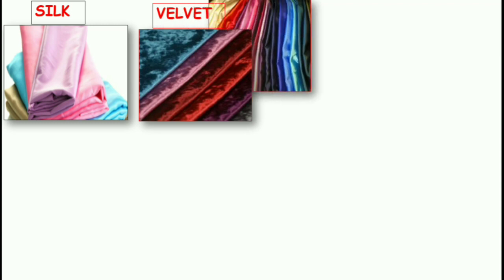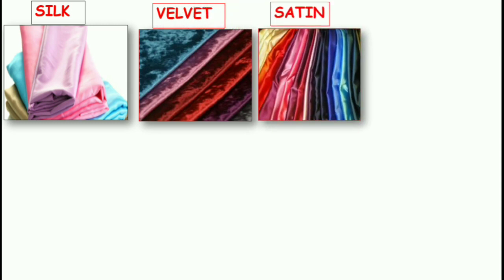Now let us move on to another type of cloth — silk. If you look at it, you can see it has a shine. There are two other cloths similar to silk: one is velvet, which is also soft and shiny, and the next one is satin. Look at all three types — silk, velvet, and satin — you will see that all three have got shine and are also soft.